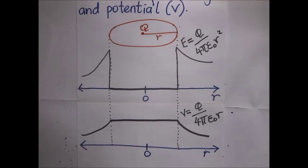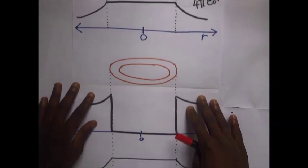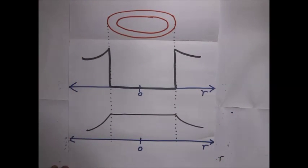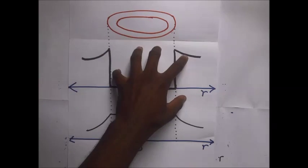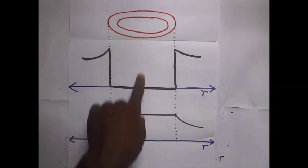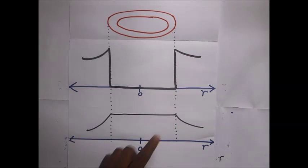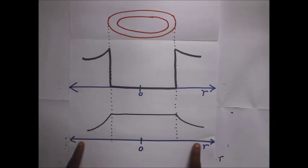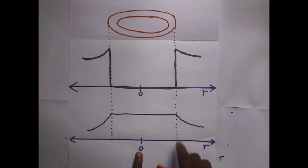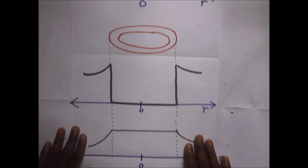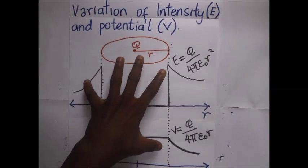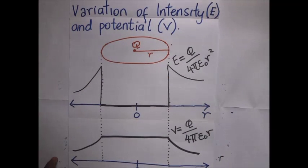The same goes with when it is a hollow conductor. We have similar diagrams. This graph shows the variation of the distance from the center and the intensity E, and the lower one shows the variation of the distance from the center and the potential. This is quite similar for both the solid conductor and the hollow conductor.